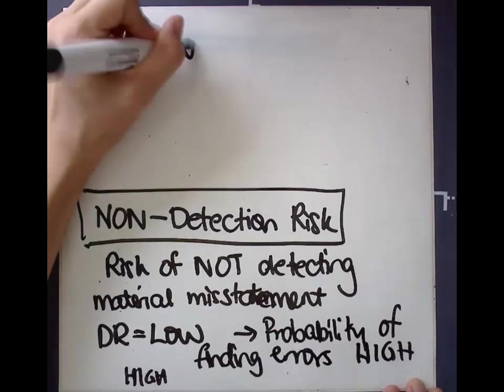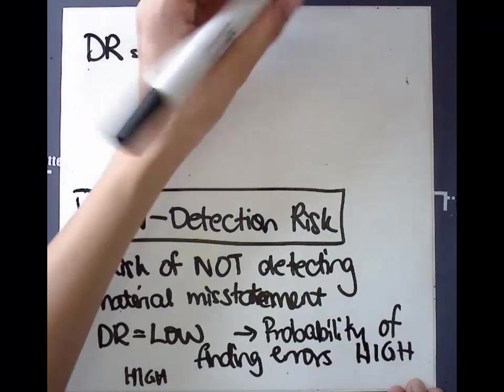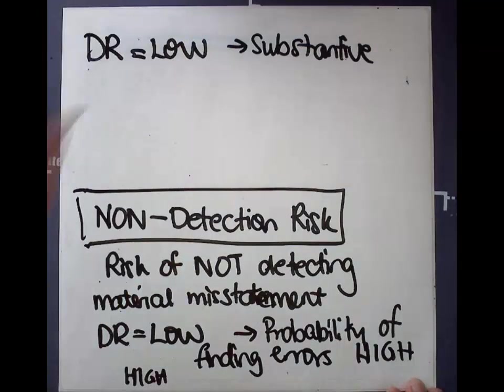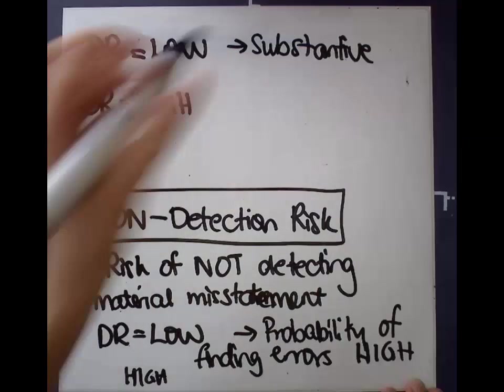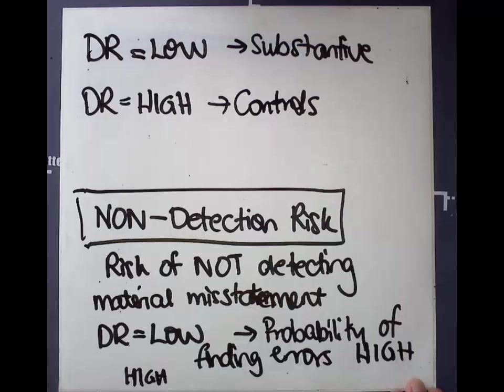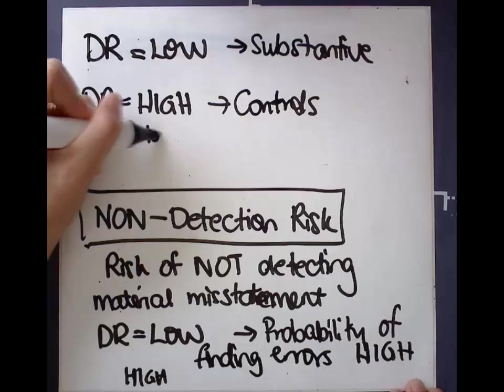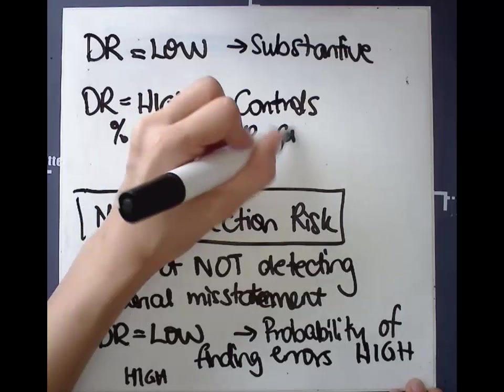So where our non-detection risk is low, we're going to do lots of very detailed checking, we call that a substantive approach. And where the risk of not finding a material misstatement is high, then we're willing to take a controls based approach, and we're only willing to take that controls based approach because we know that the percentage chance of there actually being misstatements is already low. So there's low inherent and control risk in those situations.